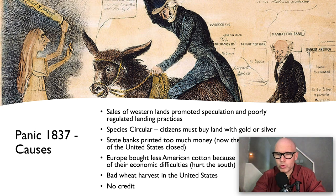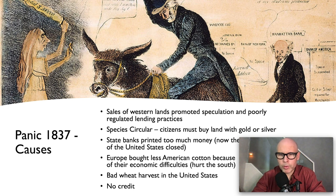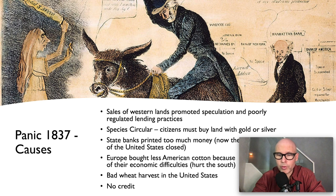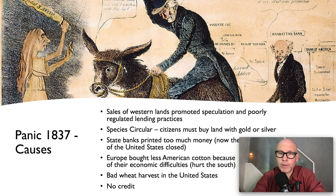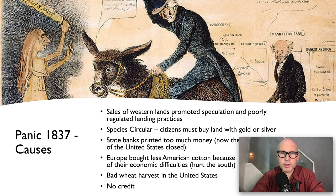State banks were also printing too much money, with no National Bank to regulate them. Europe bought less American cotton because of their own economic difficulties, hurting the South. There was also a bad wheat harvest in the United States and no available credit — if people can't borrow money, they can't buy things. All this led to the Panic of 1837, potentially worse than the 1929 depression. The panic burst in 1837: land that used to cost $10 an acre was now worth $3, and on May 4th, 1837, there was a run on the banks — in New York, banks stopped accepting banknotes for gold or silver.